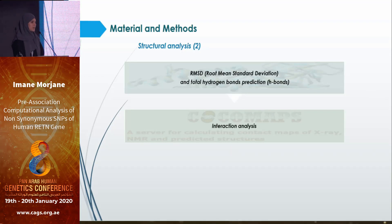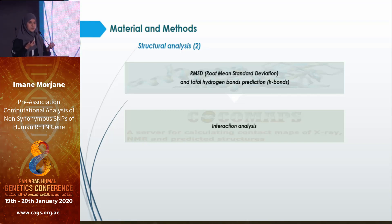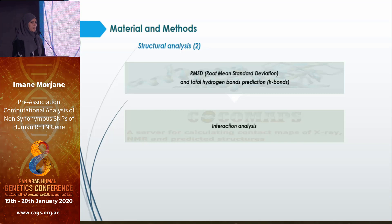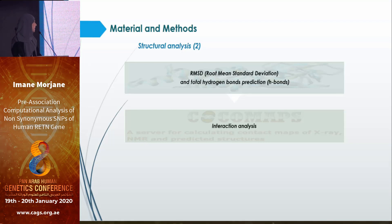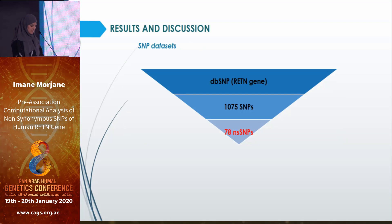Another key analysis was RMSD calculation. RMSD measures the distance between two amino acids — one belonging to the native protein and the other to the mutant protein at the same position. The greater the RMSD, the greater the deviation between the native and mutant protein. We then performed total hydrogen bond prediction and interaction analysis.